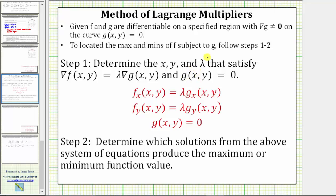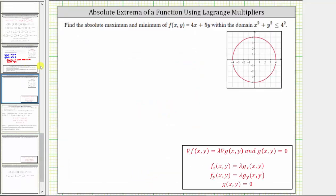These two equations result in a system of equations, which we solve for x, y, and lambda. Then in step two, we determine which solutions produce the maximum and minimum function values. Going back to our question, the objective function is f(x,y), and the constraint is g(x,y), which on the boundary is x² + y² = 16.